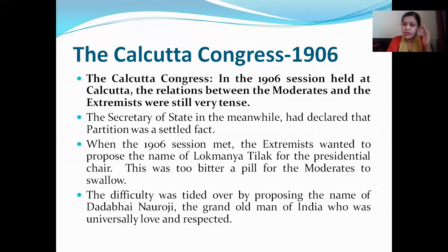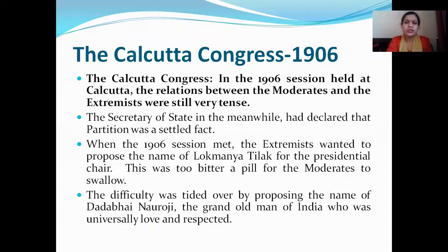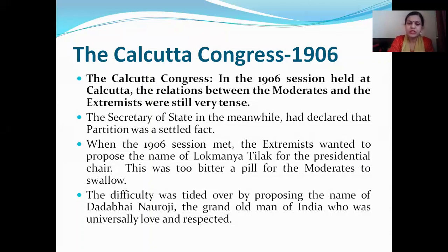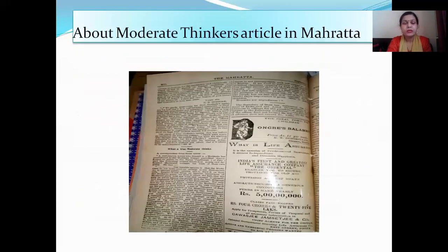In the Kolkata Congress also, the tension between moderates and extremists continued. The moderates believed in the strength and justice of the British government, while the extremists' philosophy was self-rule, Swaraj, self-belief, and self-sacrifice. The extremists wanted to propose the name of Lokmanya Tilak for the presidential chair, which was too bitter for the moderates to accept. The difficulty was resolved by proposing the name of Dadabhai Naoroji, the grand old man of India.